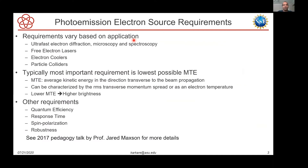Before going into the theories, let's take a quick look at what we require from photo emission electron sources to understand what properties we'd like to calculate. The requirements vary dramatically based on the application — whether it's ultrafast electron diffraction and microscopy, free electron lasers, electron coolers, or particle colliders. But generally the most important figure of merit is obtaining the lowest possible MTE, or mean transverse energy, which is the average kinetic energy of photo emitted electrons in the direction transverse to beam propagation.